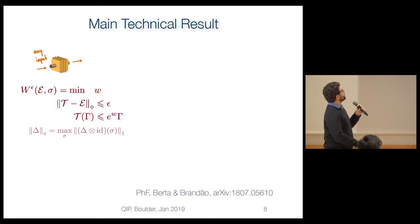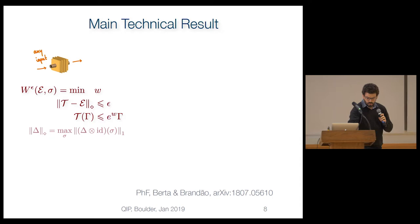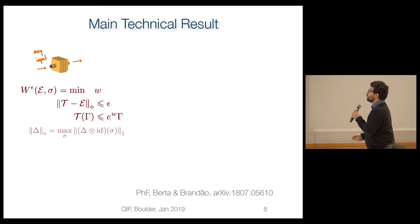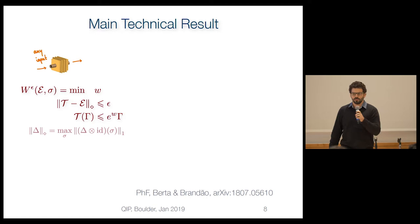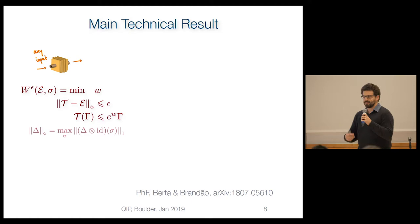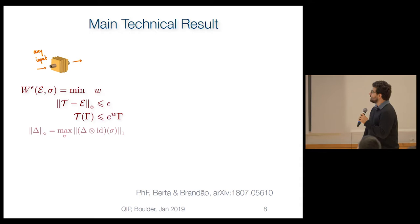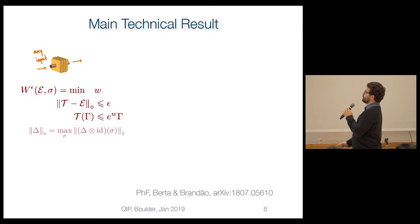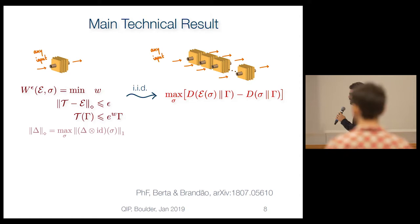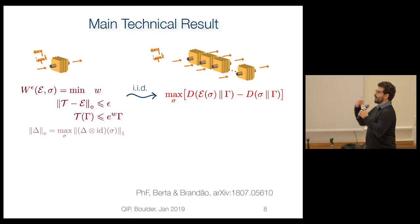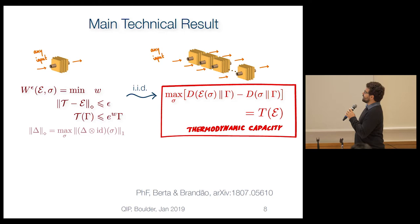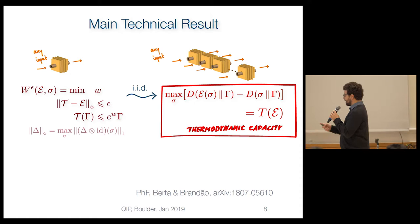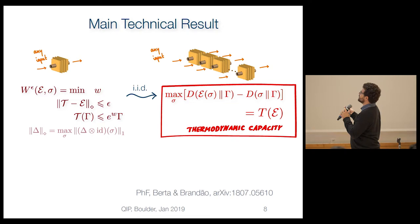Our main technical result: we optimize over channels that are close in diamond norm — which ensures the channel acts accurately for any possible input state. We show that this quantity goes to the difference of relative entropies optimized over all possible input states in the IID limit. This thing we call the thermodynamic capacity. It's analogous to capacity in the sense that it's an information measure associated with the channel that does not depend on the input state. We have two versions: one using Gibbs-preserving maps, and one using thermal operations restricted to time-covariant channels.